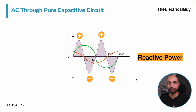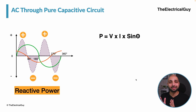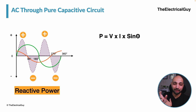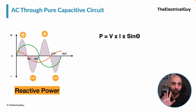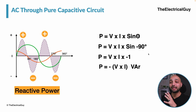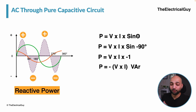Let us calculate the power mathematically. Power P equals voltage times current times sin θ. The angle θ between voltage and current here is negative 90°. In an inductive circuit voltage leads current, making it positive 90°, but here voltage lags current by 90°, so we use negative 90°. Therefore, P equals V × I × sin(−90°), and sin(−90°) equals −1, giving a resultant power of negative V × I volt-ampere reactive.